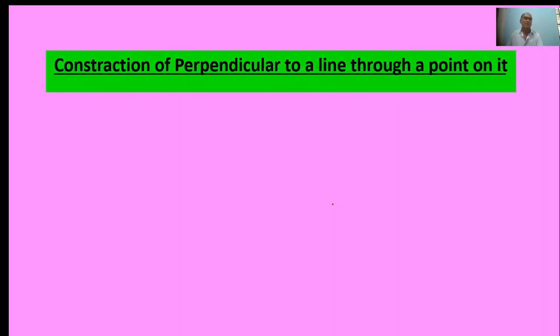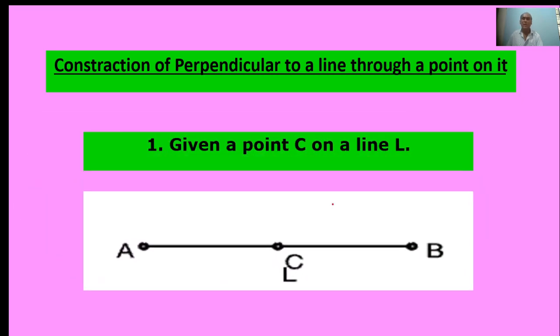Construction of perpendicular to a line through a point on it. First of all, given a point C on a line L. Here, the line, point C is given.